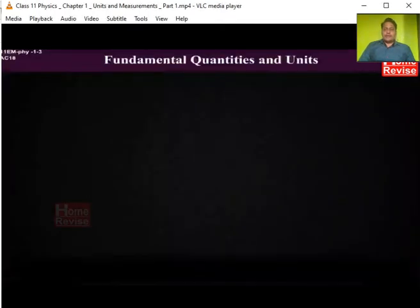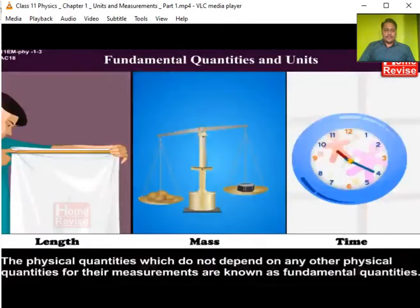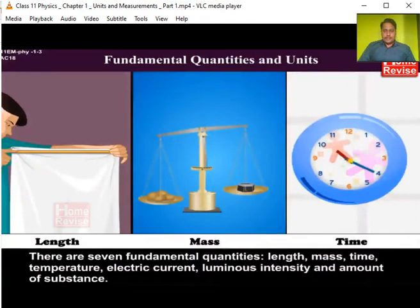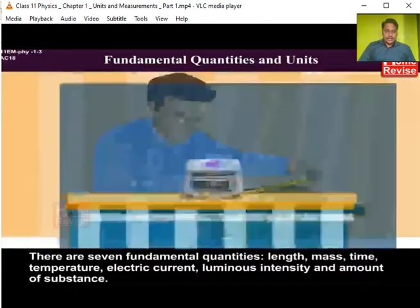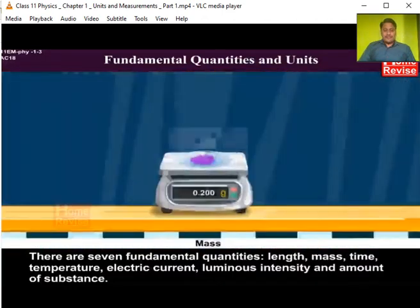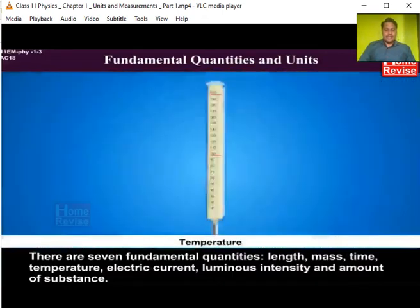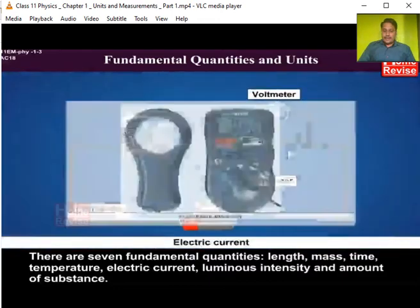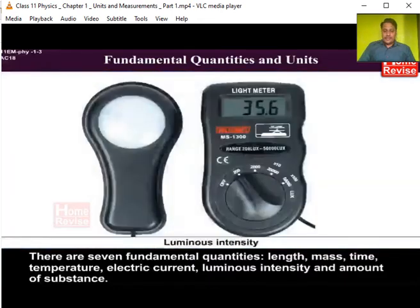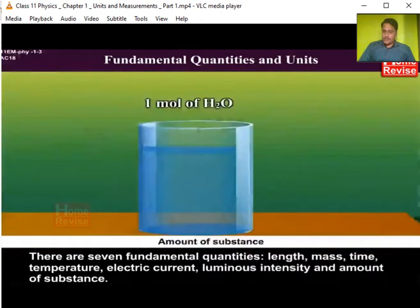Fundamental quantities and units: the physical quantities which do not depend on any other physical quantity for their measurement are known as fundamental quantities. They are very basic in nature. There are seven fundamental quantities: length, mass, time, temperature, electric current, luminous intensity, and amount of substance.